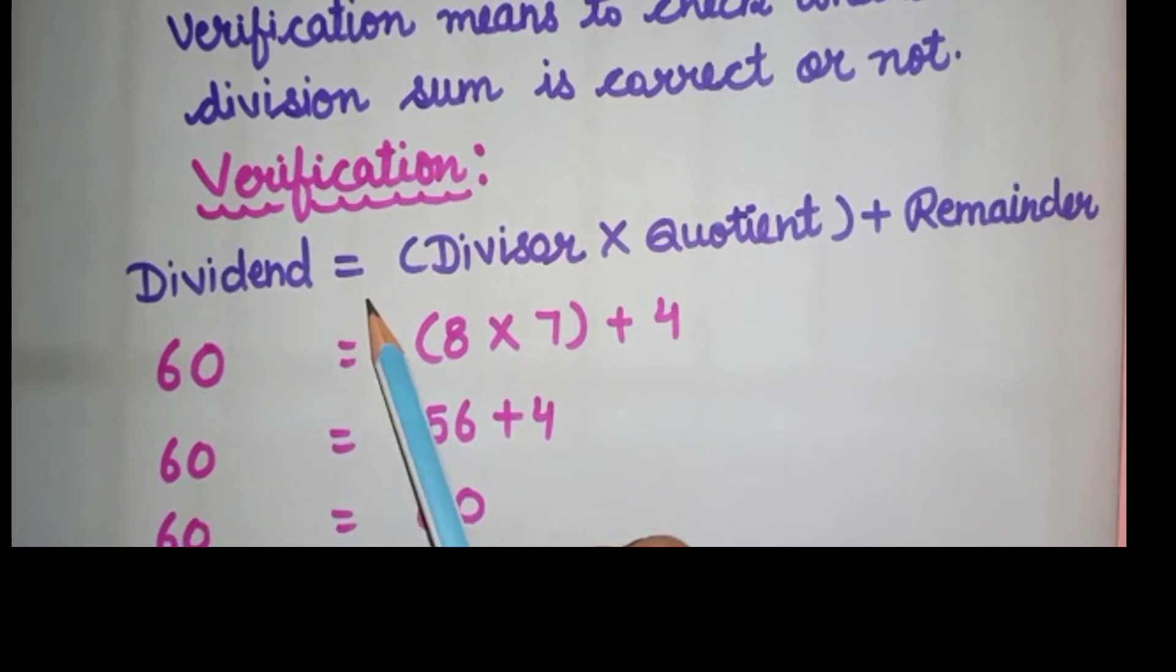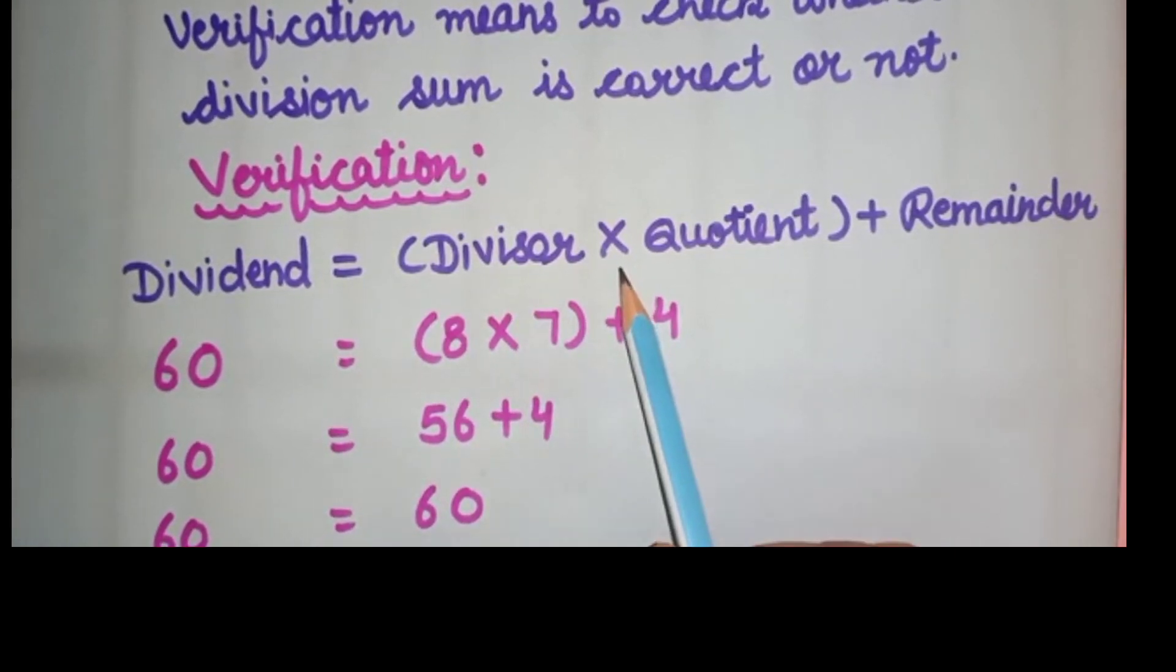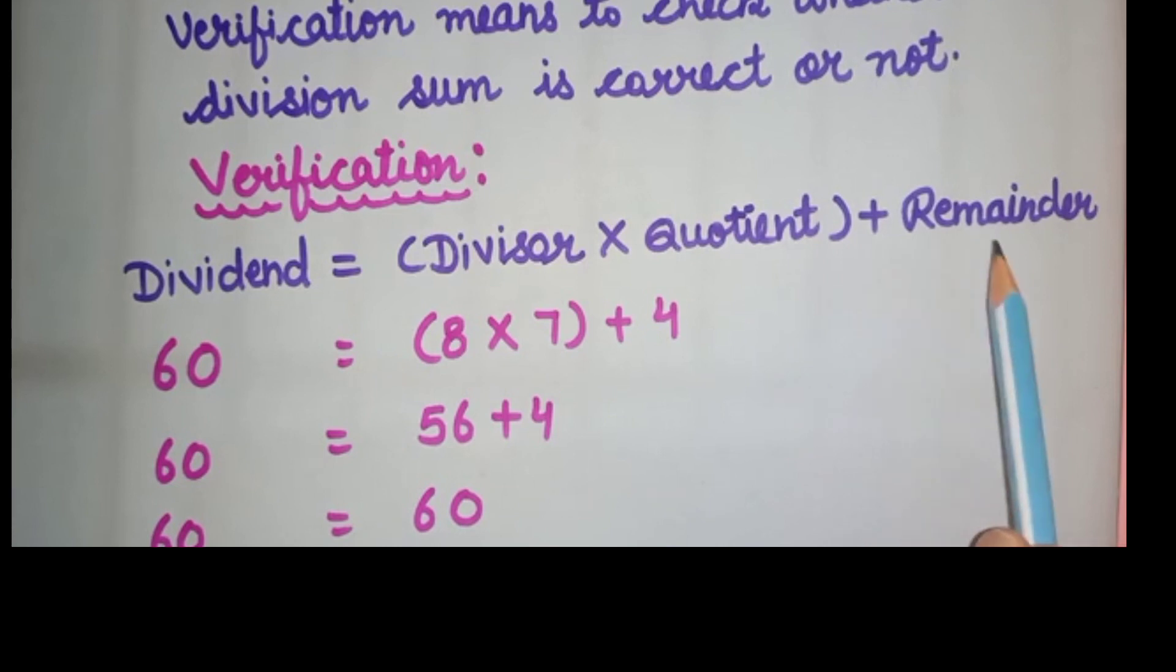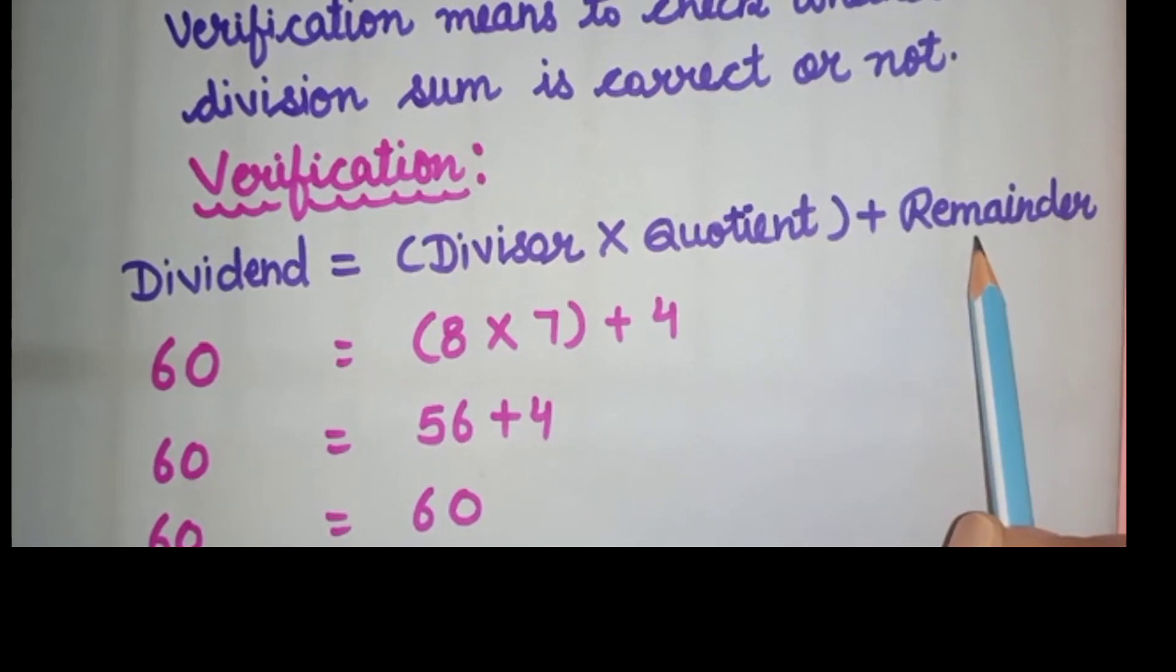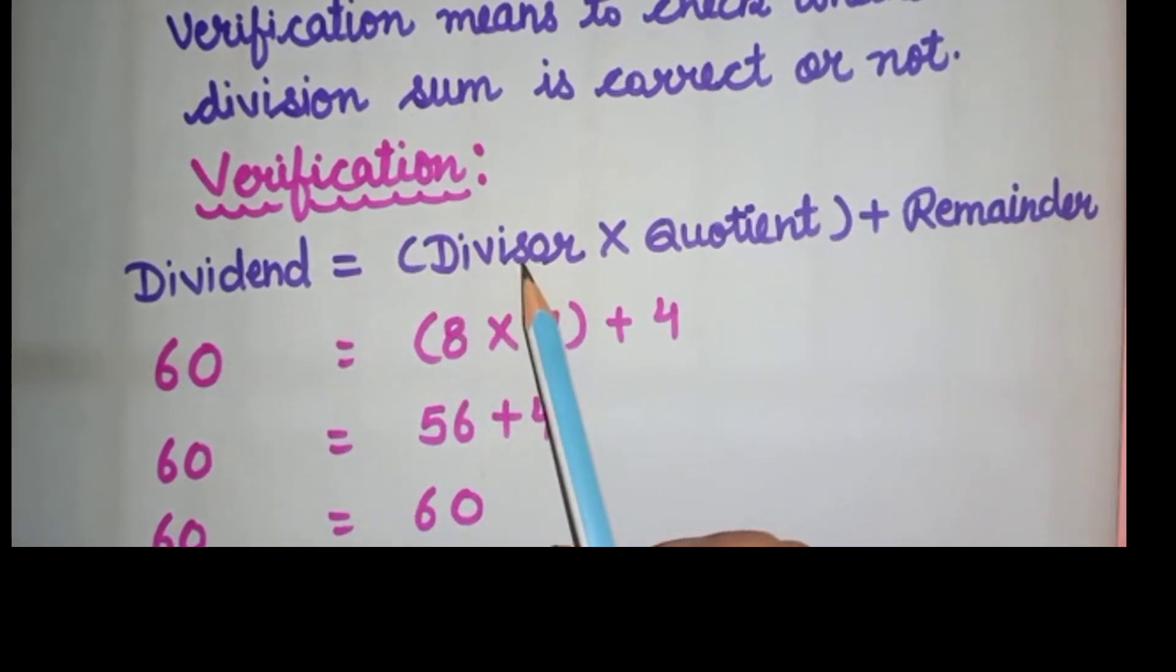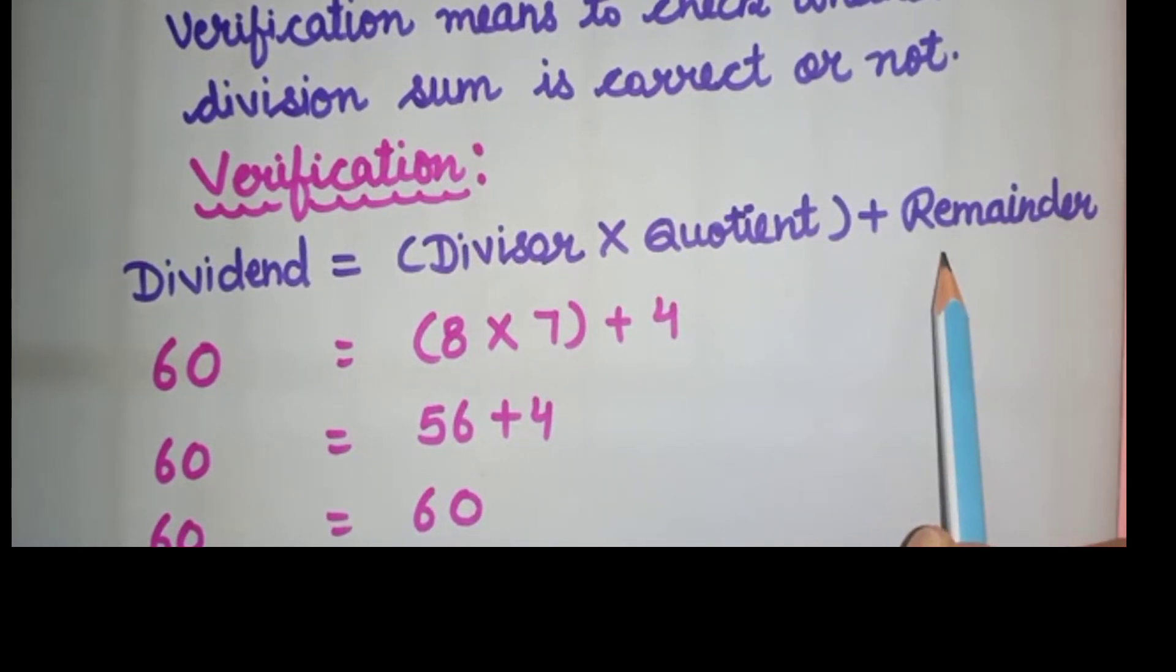Dividend is equal to divisor multiplied by quotient plus remainder. The formula is, dividend equals divisor multiplied by quotient plus remainder. Better you have to learn this formula.